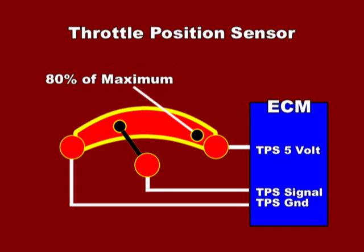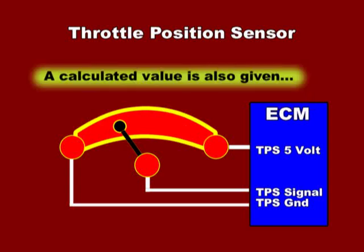Here in the ATP scan tool, this PID is also given with a calculated voltage value to help in the diagnosis. This value should always be compared with the actual value measured at the sensor itself.